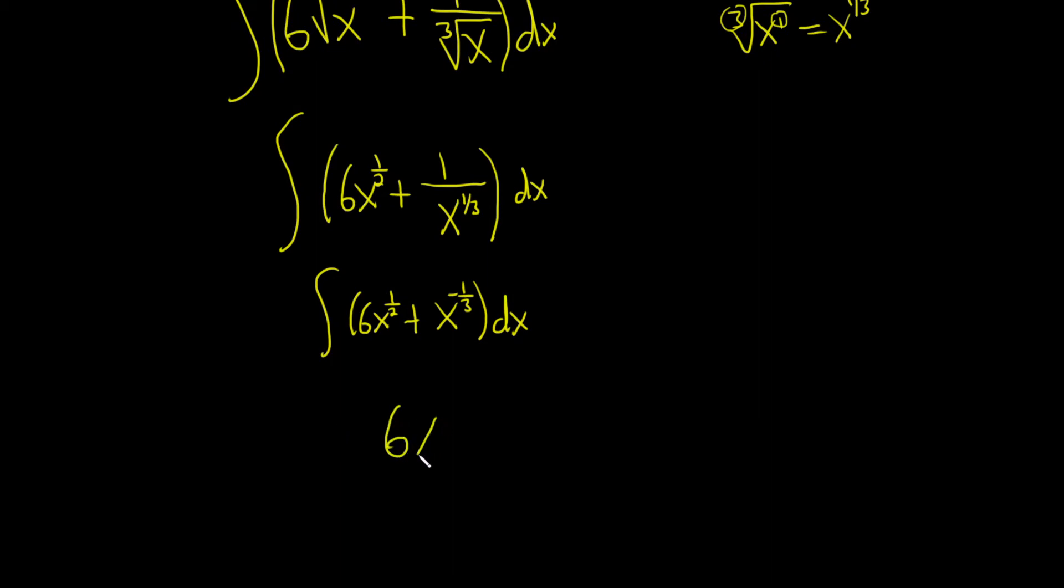This will be 6x, and we're taking 1/2 and adding 1. So 1/2 plus 1 is the same as 1/2 plus 2/2, which is 3/2. So this is x to the 3/2, and then we divide by 3/2, plus...